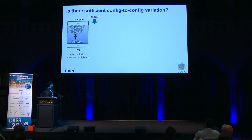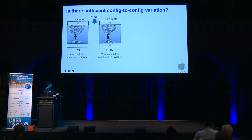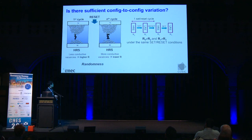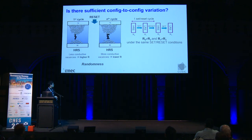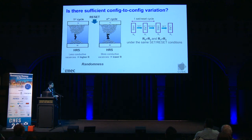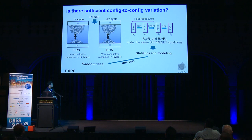The resistance states are not predictable — for example, one cycle might have a certain number of particles in the filament, but a later cycle could have more, resulting in lower resistance. Because these resistances are unpredictable, we can only obtain statistics, build a model, and use the results to analyze the randomness. This is the background of the work.